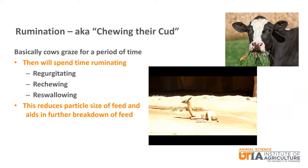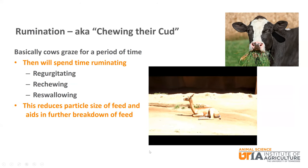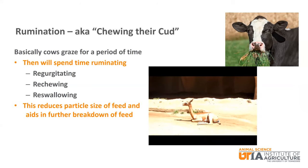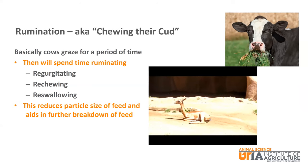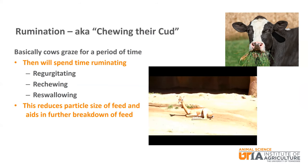Watch this video to see an impala chewing its cud. The long neck makes it ideal to watch the rumination process. At the beginning, you will see the impala regurgitate its food as it moves up its neck. It will chew for several seconds and then re-swallow the forage, where you will see the cud bolus move back down its neck as it swallows.